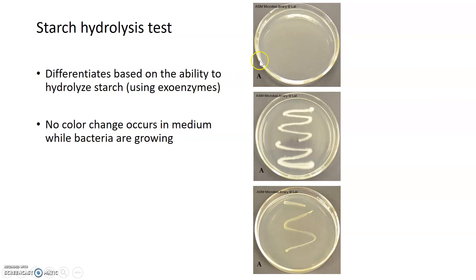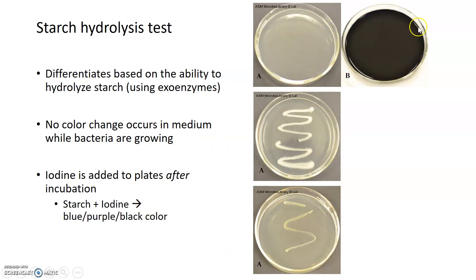What's important to remember is that you can see an uninoculated starch agar plate at the top and then two different types of bacteria growing on it in these two plates below. There's no color change or way to differentiate while the bacteria are growing on starch agar. Everything happens after you add another reagent and that reagent is iodine. Iodine gets added to starch agar plates after the bacteria have had a chance to grow. What that results in is a reaction that turns the plate, even when uninoculated, into a dark blue, purple, or black color. You can see the black color up here.